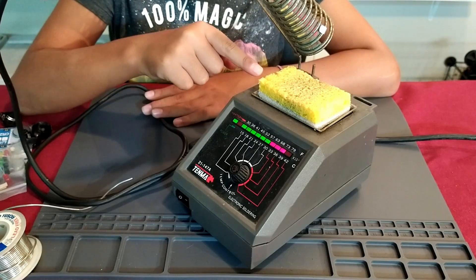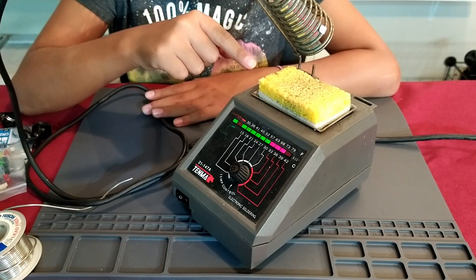Next, make sure the sponge is a little wet so you can clean the tip of the soldering iron.